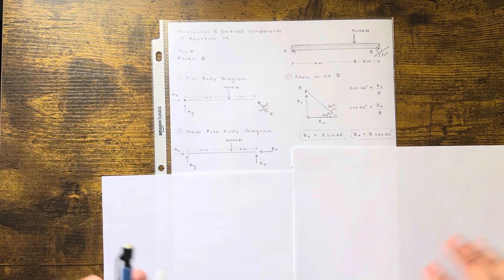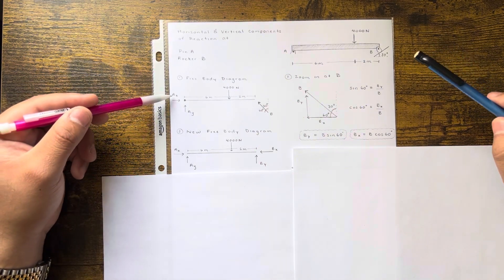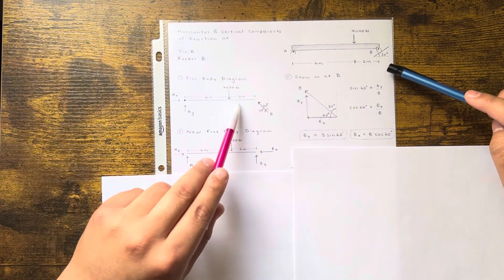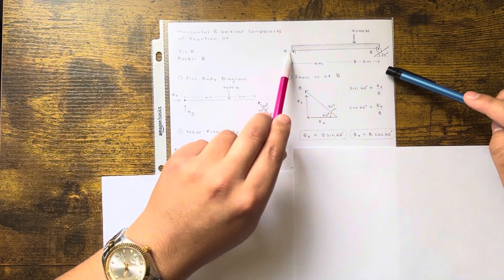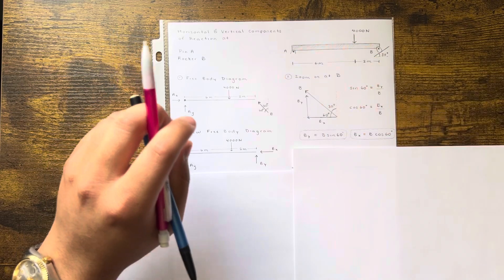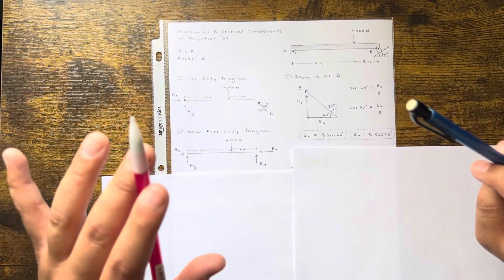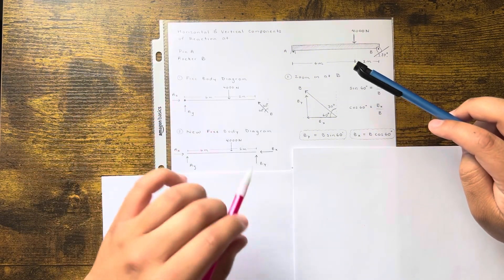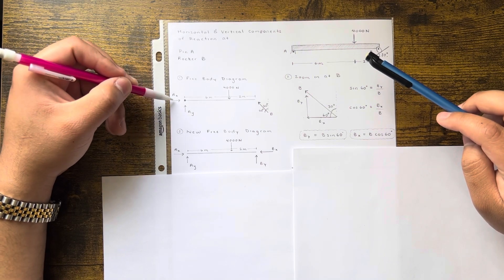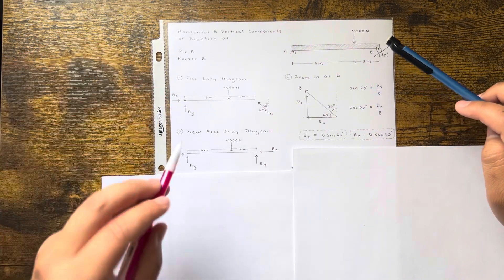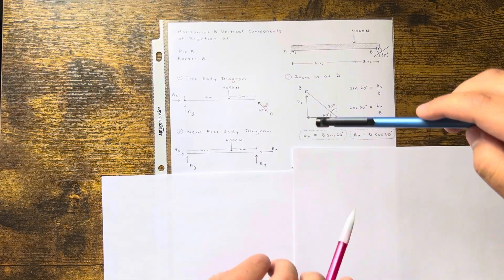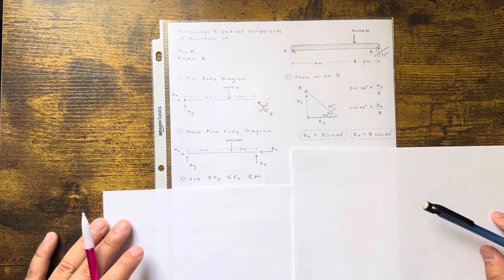This is the new free body diagram — everything stayed the same. You have 4,000 N coming down, two meters away from B. The pin at A has two reactions: one in the x direction and one in the y direction. All I did was replace the original B vector with these two components Bx and By, and now you'll see how easy the problem gets.